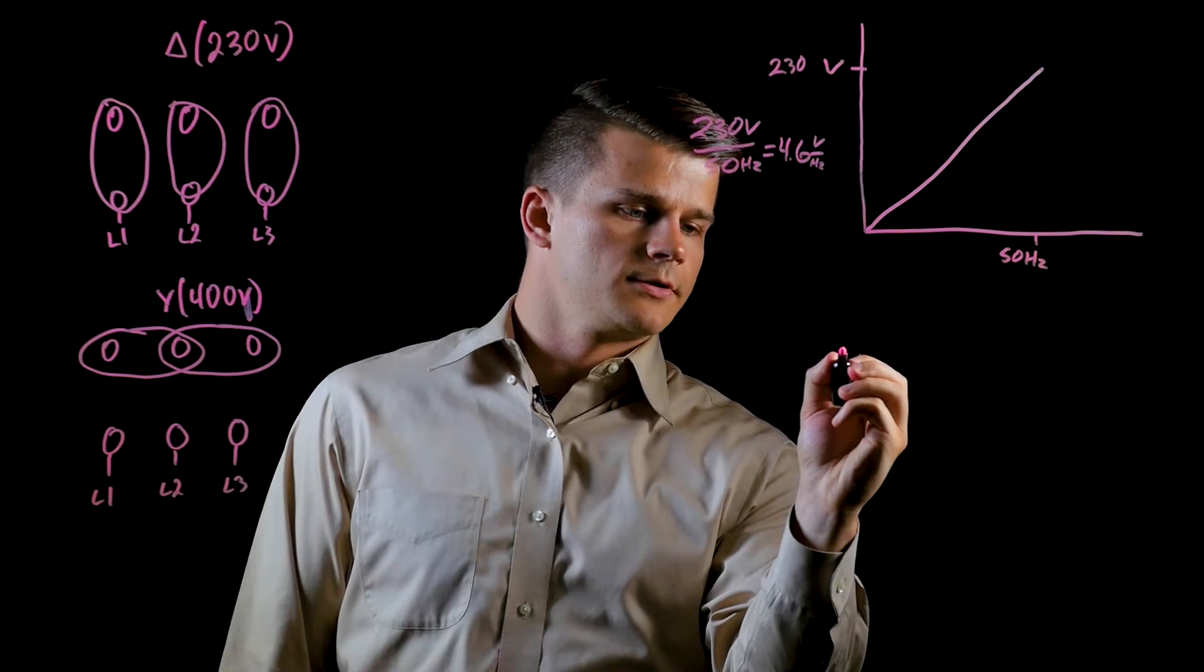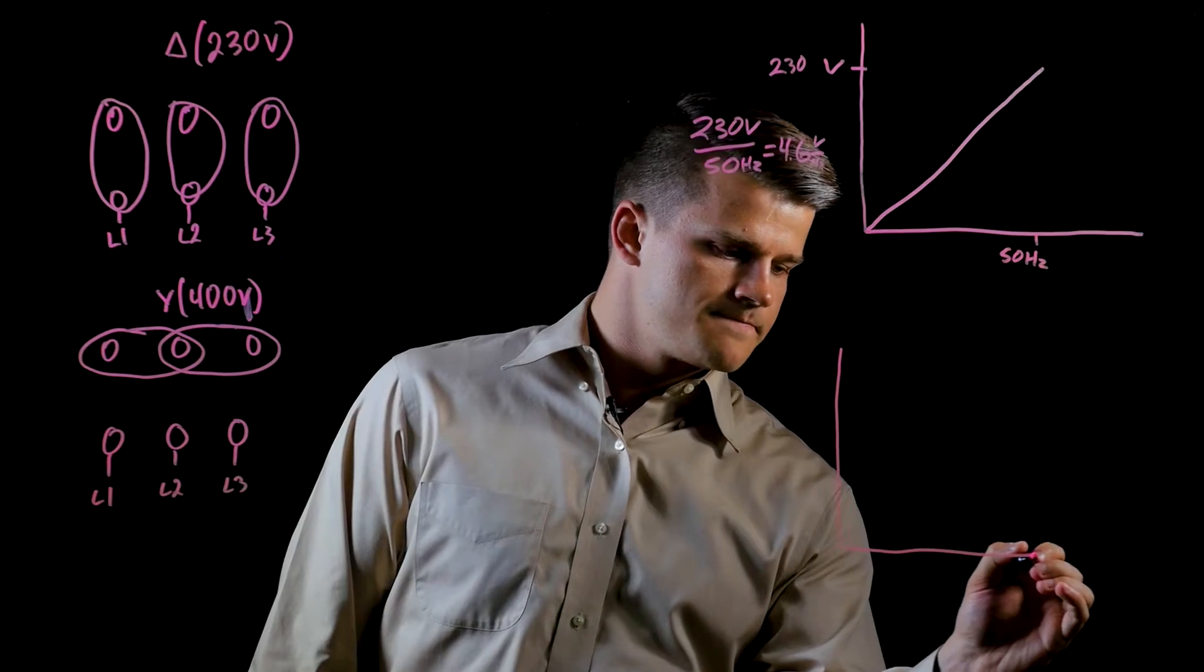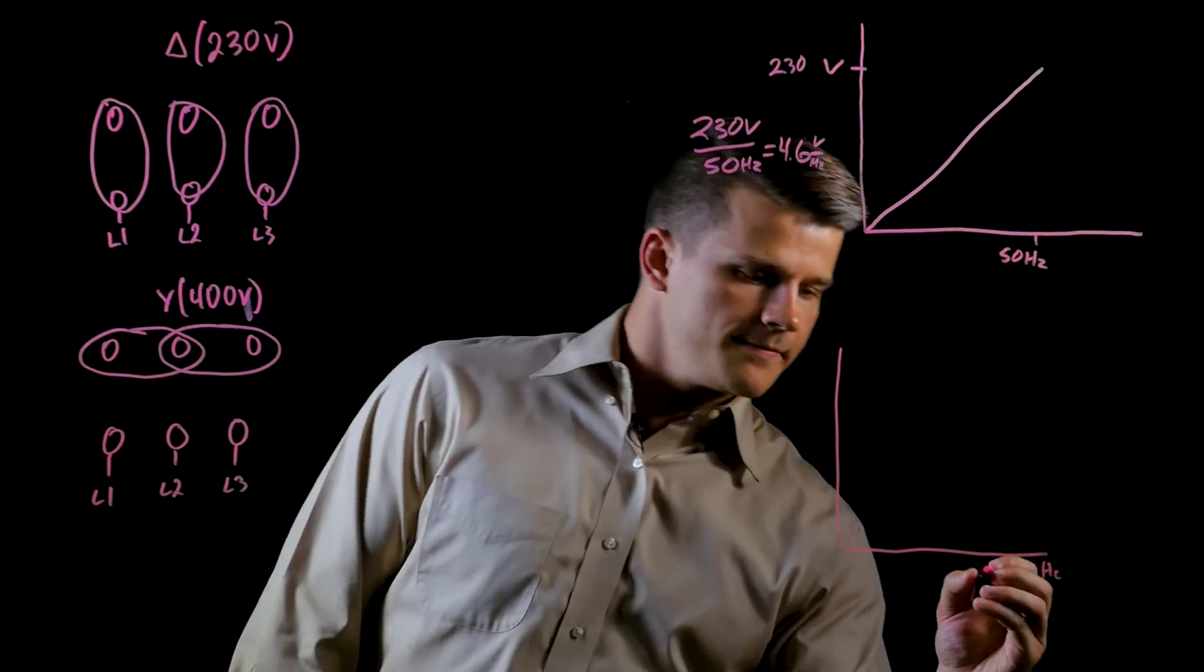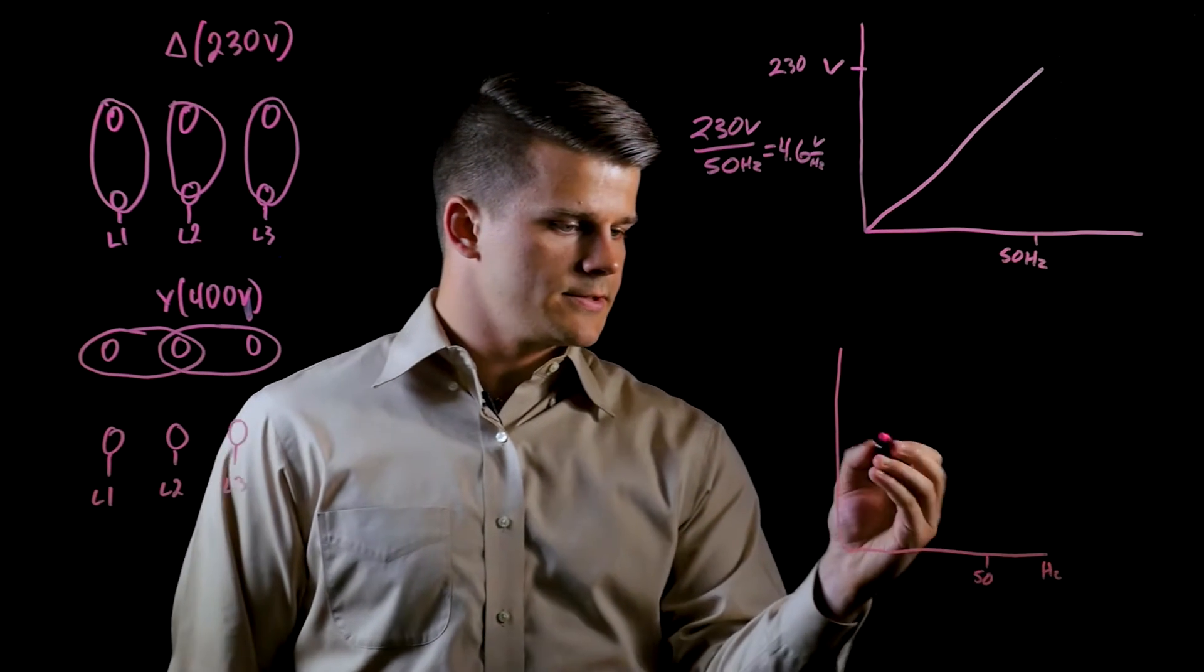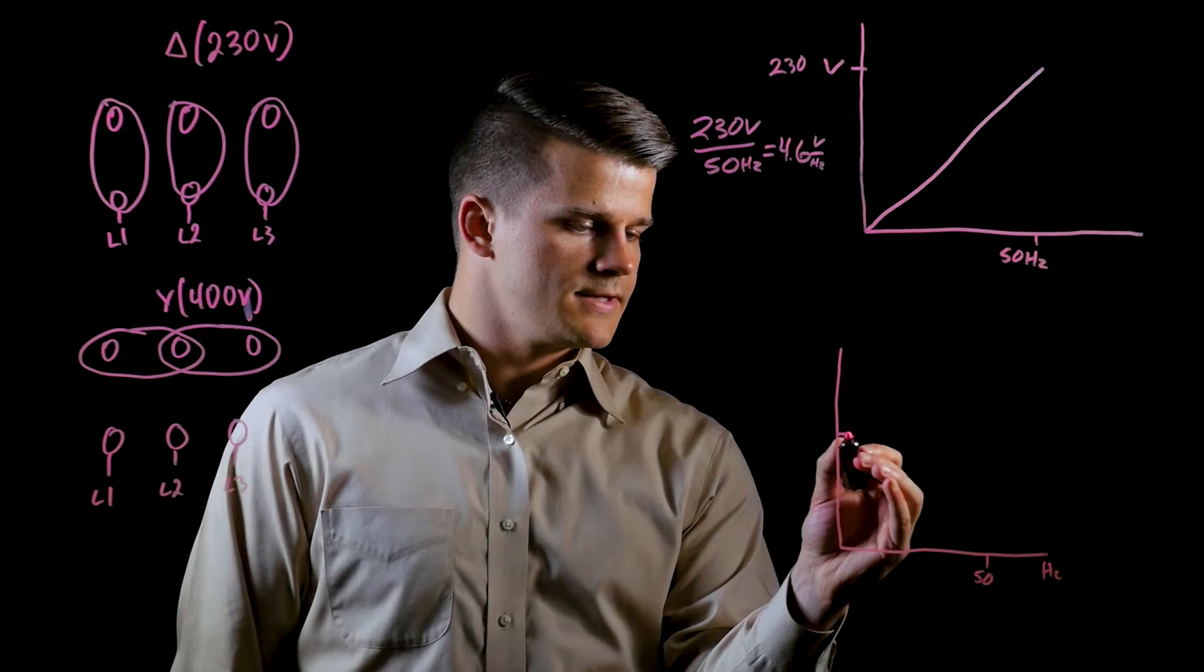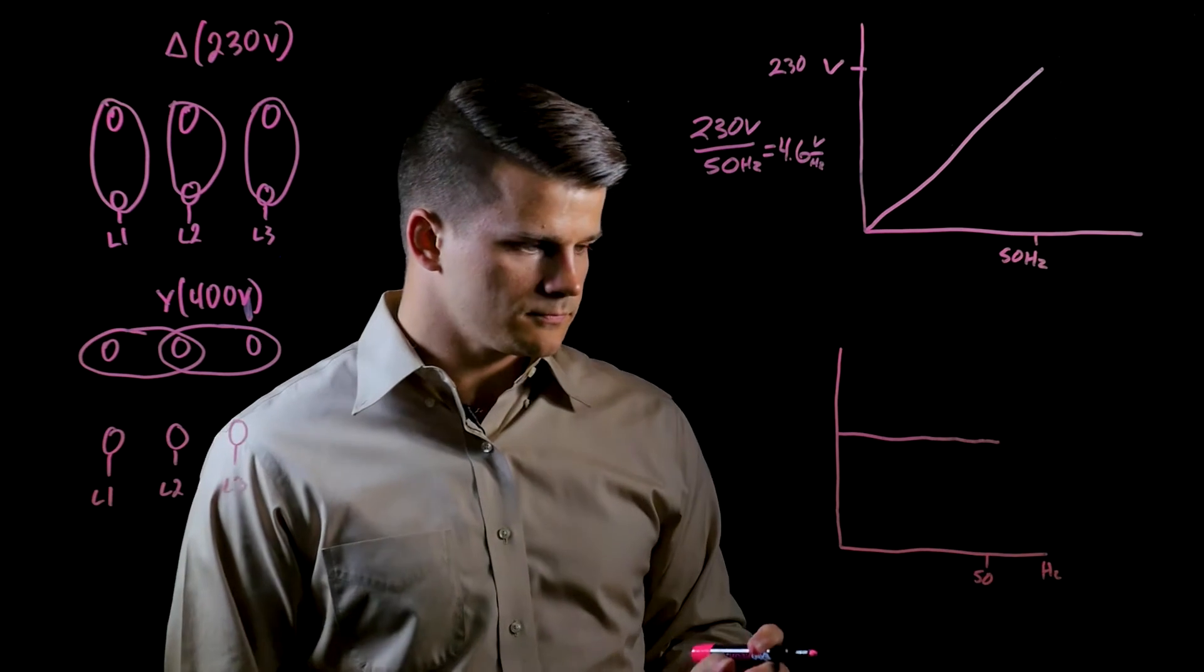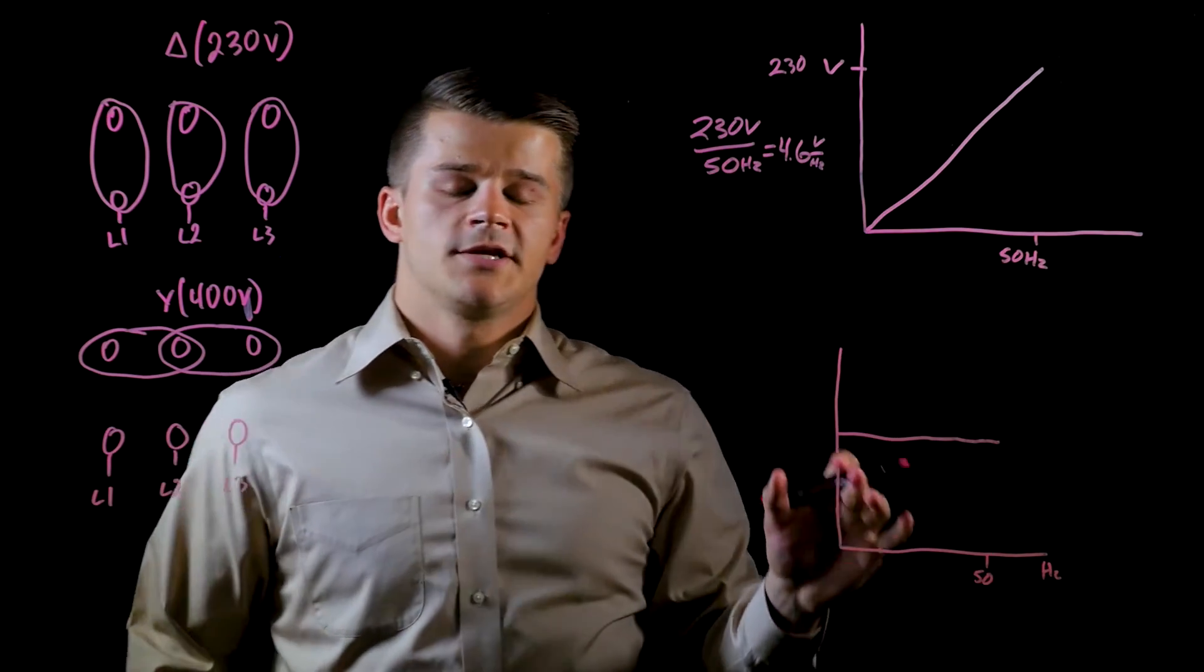Now that we've talked about torque, let's get into the power and torque curves. We'll have frequency here on the bottom and 50 Hertz here. As I said, torque stays constant up to 50 Hertz with this Delta configuration.